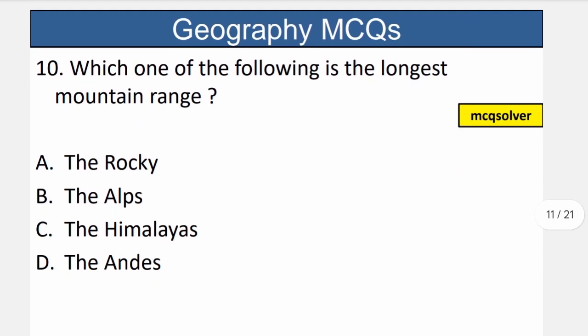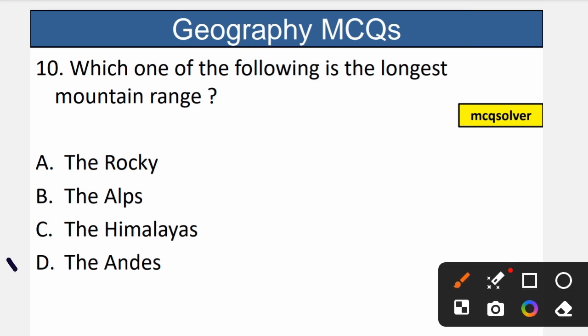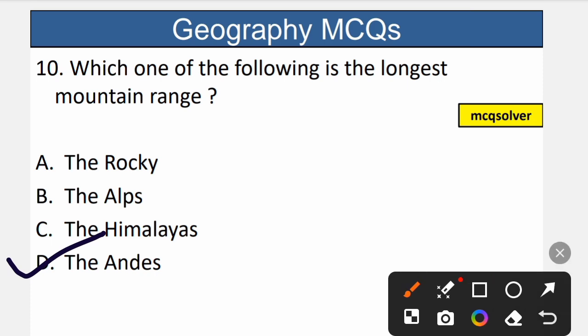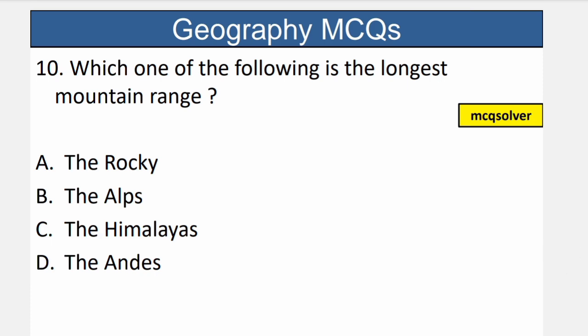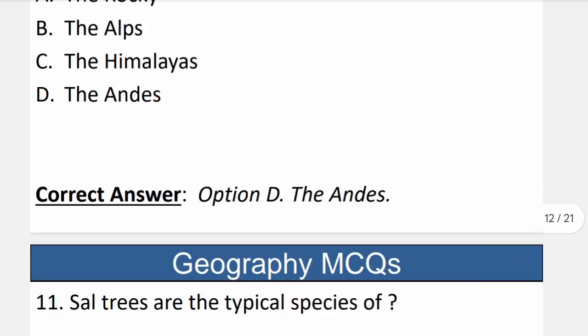Question number 10: Which one of the following is the longest mountain range? The correct option is D — the Andes. The Andes is the longest mountain range in the world. So D is the correct option.